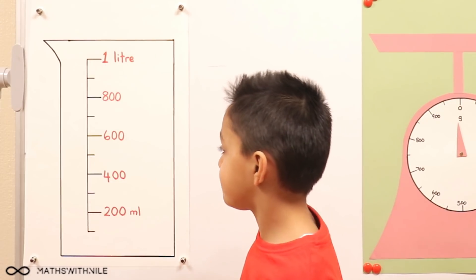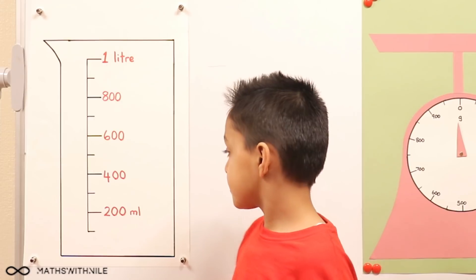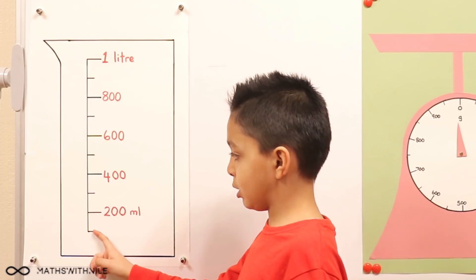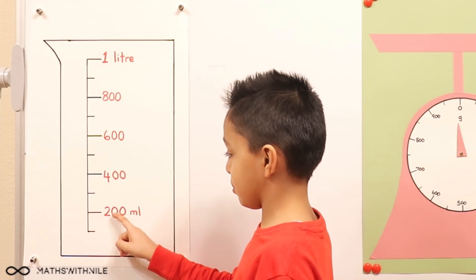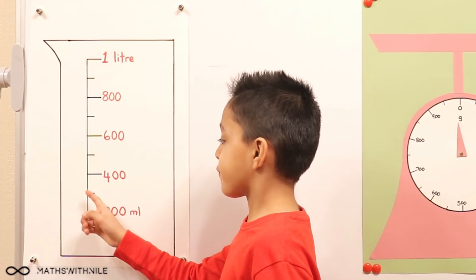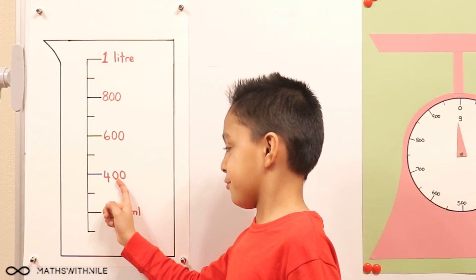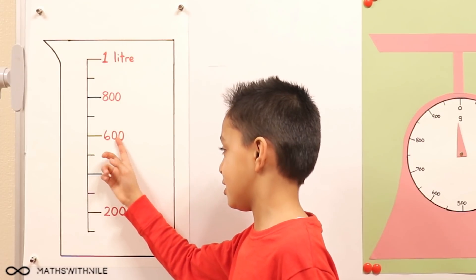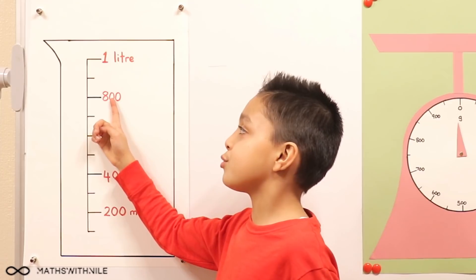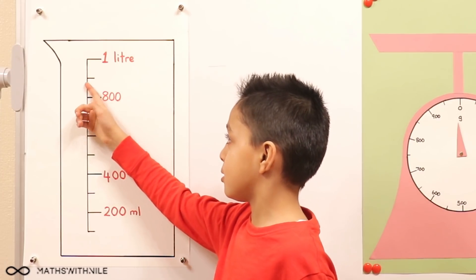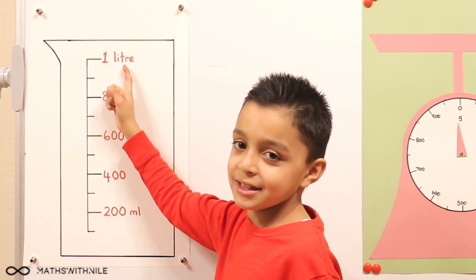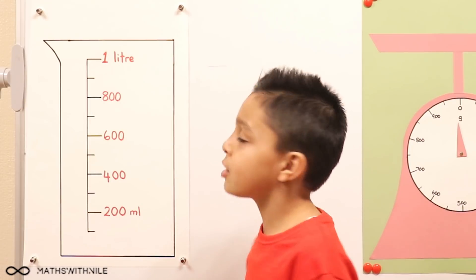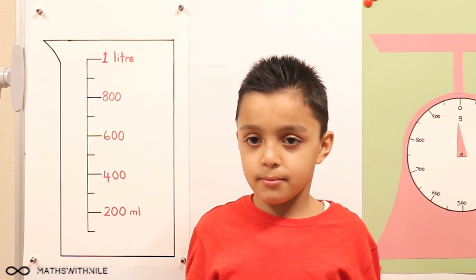So now can you count up from the bottom? 100 milliliters, 200 milliliters, 300 milliliters, 400 milliliters, 500 milliliters, 600 milliliters, 700 milliliters, 800 milliliters, 900 milliliters, 1,000 milliliters, one liter.